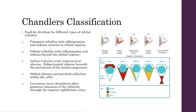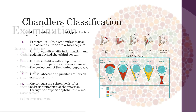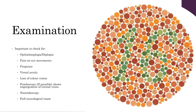This can extend through the superior ophthalmic veins and can cause cavernous sinus thrombosis. When examining these patients, it's important to check for any signs of ophthalmoplegia, double vision, or pain on eye movements, as well as any proptosis or bulging of the eye.